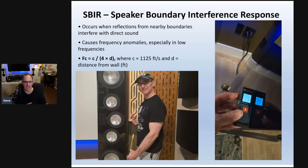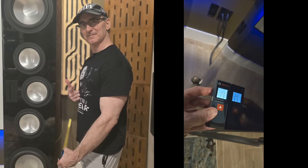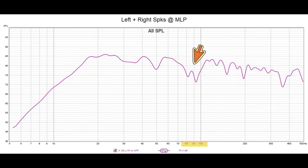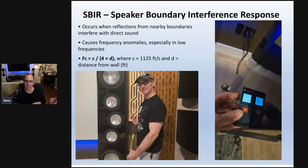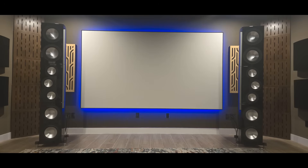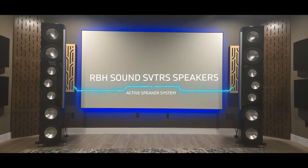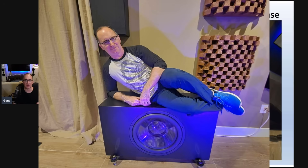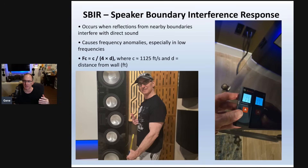You can see I'm measuring my SVTRS system — the RBH system — using a tape measure and a laser pointer. My speakers are roughly three and a half feet off the front wall, and as a result I have a big bass dip in the 80 to 100 Hz range. This is my RBH SVTRS active speaker system with four 12-inch subwoofers per tower, so eight 12s just from the front speakers, plus a 21-inch infrasonic sub from RBH and two other 1212 subs behind me — five subs total.